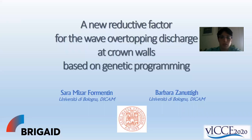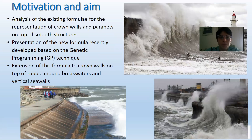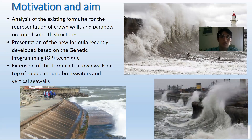The aim of the contribution is to present a literature review of the other methods available for the representation of such effects and their limits, and to present the new formula we developed based on machine learning technique, specifically genetic programming. At the end of the presentation, we will also see the extension of this new formula to rubble mound structures with crown walls.